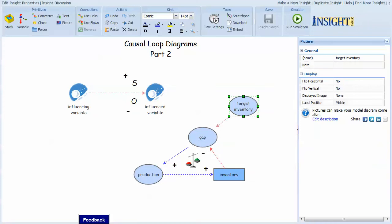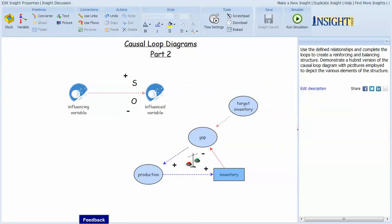And finally, when it reaches the goal, then there would be no more production. Once the inventory reached the target inventory, production would stop and nothing would change until something reduced the inventory. So here's one type of loop.